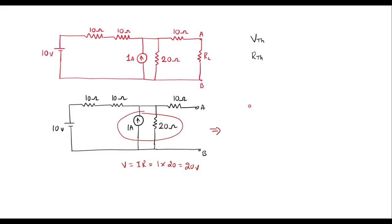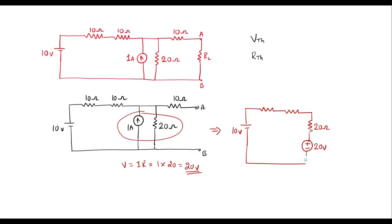Now let me draw the equivalent circuit. This 10 ohm will be connected as it is, here we have 10 ohm, here we have 10 ohm. This resistor will come in series with the voltage source. The magnitude of the voltage source is 20 volts, this is 20 ohm. According to the direction, the head end is on top and tail end is on bottom, meaning this end is positive and this end is negative. This 20 ohm resistor is connected in series with it. Here we have 10 ohm, 10 ohm, and 10 ohm resistors. We need to calculate the voltage between terminal A and B, which is VTH.